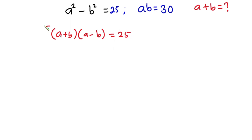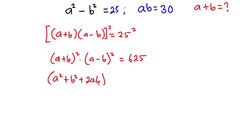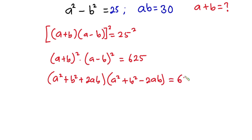Now let's go ahead and raise each side of this equation to the second power. We can write the left hand side as (a + b) all squared times (a - b) all squared, and this is equal to 25 squared, which is 625. Now expanding this whole thing, we have (a² + b² + 2ab) times (a² + b² - 2ab), and this is equal to 625.